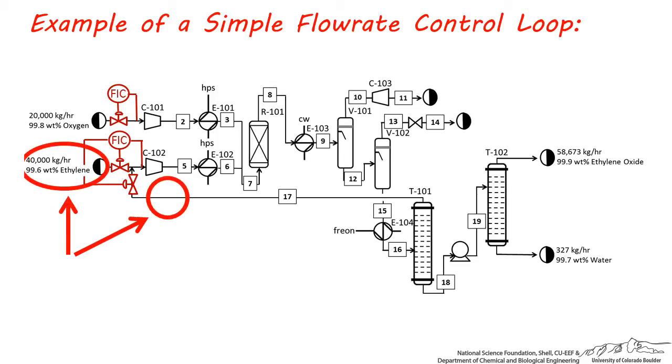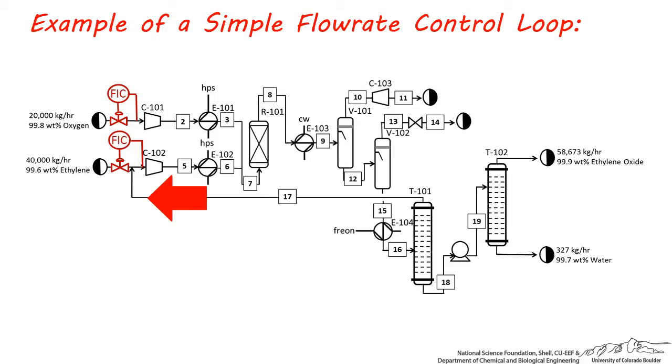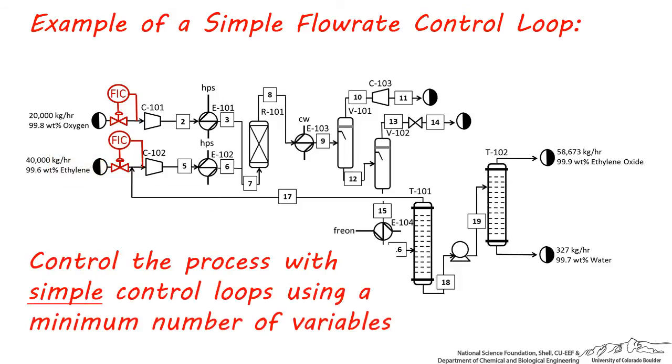Because these two streams are almost the same composition, adding this additional control loop for the recycle stream is unnecessary. This is because if the flow rate coming from this distillation column is too high, you can just lower the flow rate of ethylene coming from the storage supply. If the flow rate coming from the column is too low, you can increase the flow of fresh ethylene coming into the process. So be sure not to over-design a control loop. Make sure you always control the minimum number of variables as possible while still maintaining adequate control of the process.